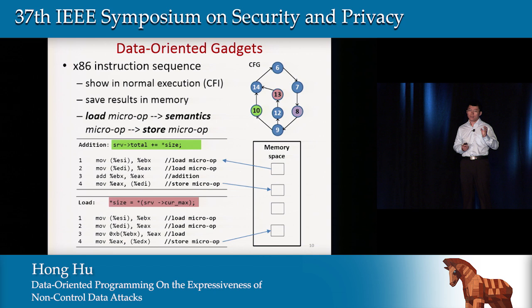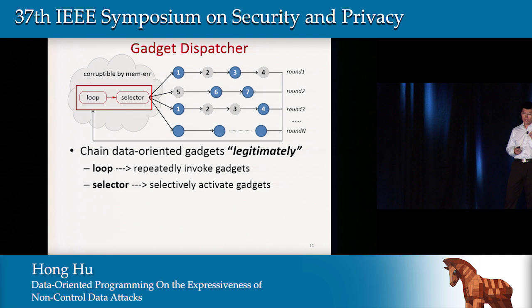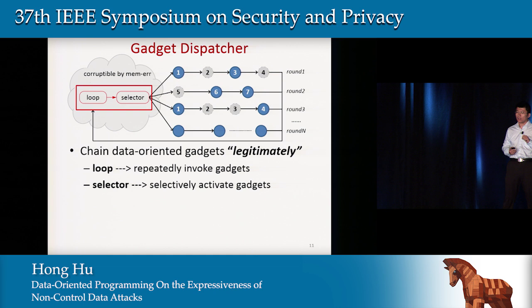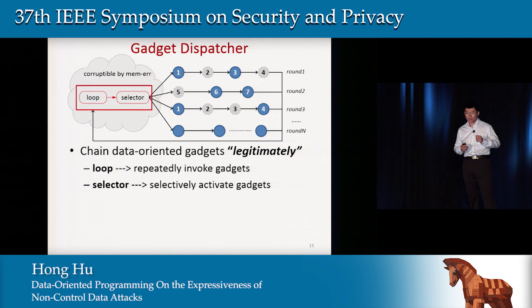Once we have the gadgets, we need to connect them together in a particular order to build interesting attacks. This is the purpose of the gadget dispatcher. Gadget dispatchers connect data-oriented gadgets legitimately with respect to the control flow graph. A dispatcher has two components: a loop to make the program execution go through gadgets repeatedly, and a selector to selectively enable particular gadgets each round. For example, the first round enables gadgets one and three, the next round enables gadgets six and seven, and the third round may enable gadgets one and four. In the previous code, the while loop serves as the loop and the memory error serves as the selector.